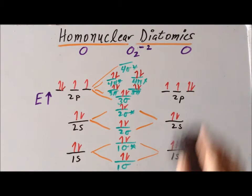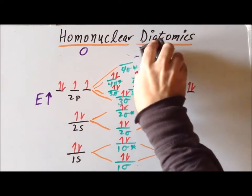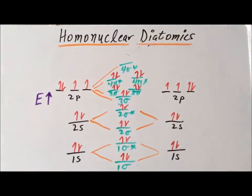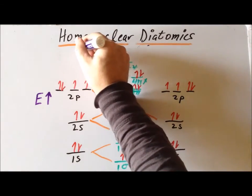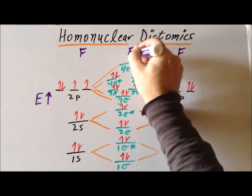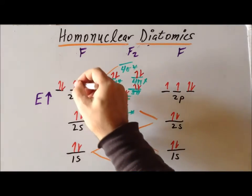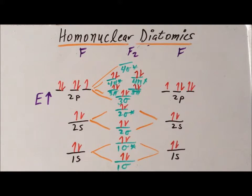And last, but not least, for the second row of the periodic table, as far as homonuclear diatomic molecules, we want to look at difluorine. So difluorine is the way we generally think of fluorine in the atomic state. It's a gas. One difference from oxygen to fluorine is fluorine has nine electrons, whereas oxygen only has eight. So now we have a total of 18 electrons in our system.